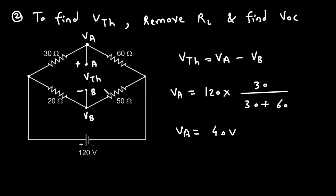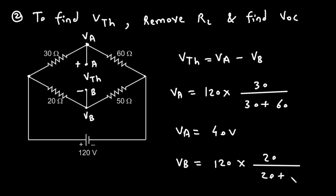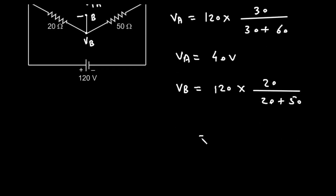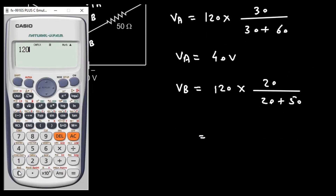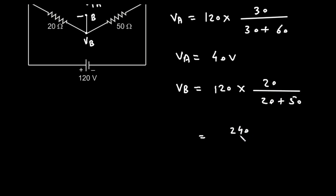Similarly, we will find the value of VB. VB is the voltage across the 20 ohm resistor. Using voltage division: VB = 120 × 20 / (20 + 50). Solving this gives 240 divided by 7 volt. So VB = 240/7 volt.